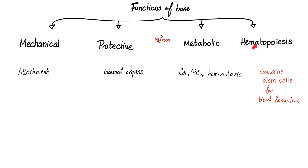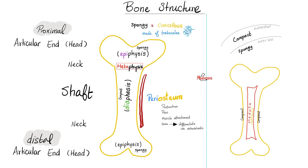Bone structure: we have two types of bone — compact bone, which is very strong, and spongy or cancellous bone, which is less strong. The bone is covered by periosteum, which protects the bone and contains pain receptors. You can get the manliest man in your class and hit his periosteum — in no time, he'll be crying like a baby. That's why bone marrow biopsies, where the doctor pierces the periosteum with a needle, is a very painful procedure in hematology.